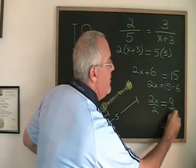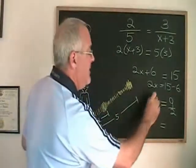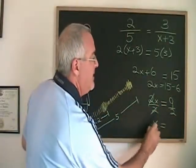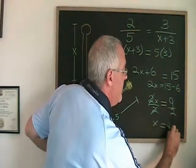Finally, if I divide both sides by two, I can isolate my X, and X is equal to nine divided by two, which is 4.5.